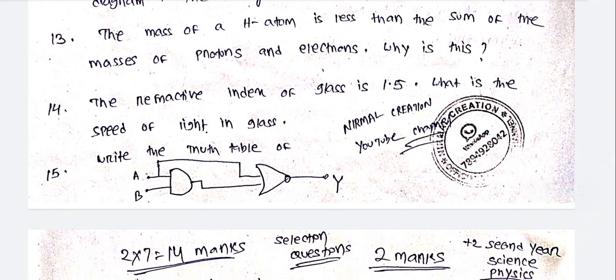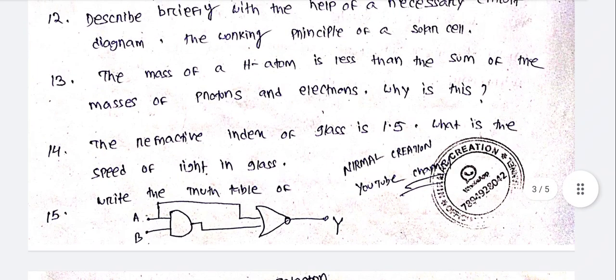The refractive index of glass is 1.5. What is the speed of light in the glass? So write the truth table. This is your diagram. Give the truth table. You have to learn the truth table.